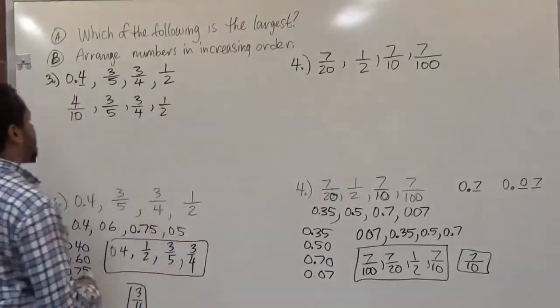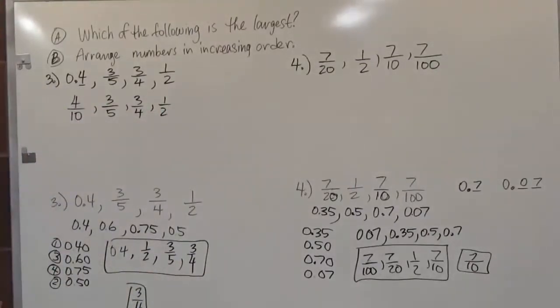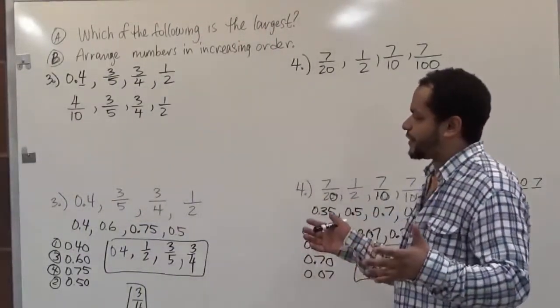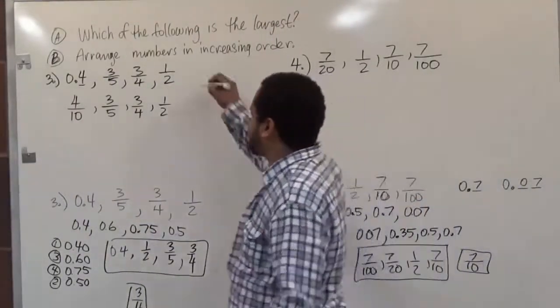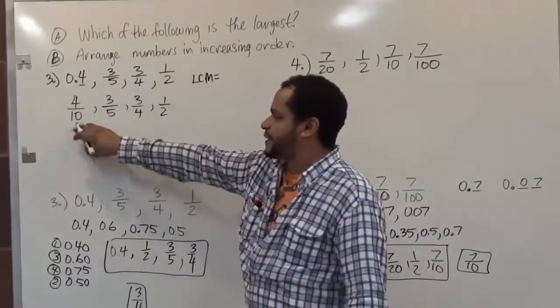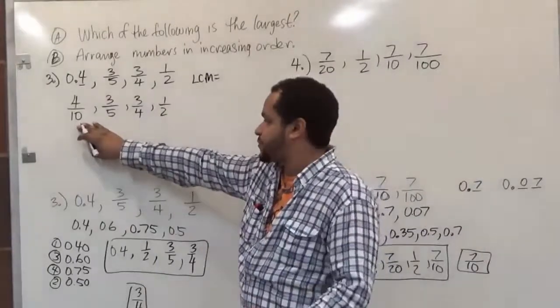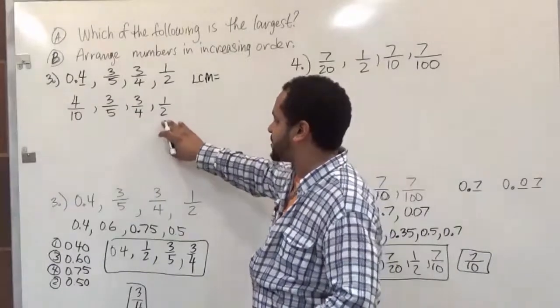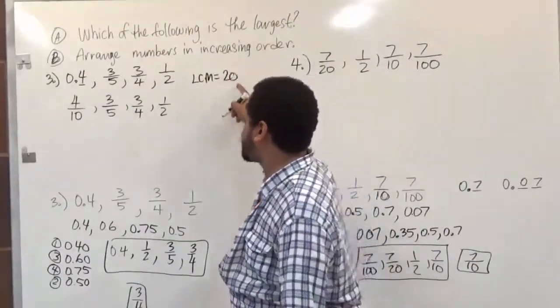And to see which one of these are bigger we want to make all the bottom numbers the same. Now if we're looking at 10, 5, 4 and 2 we know that these all have a common multiple, which we call the least common multiple, of 20. Because you can make 20 with 10, 2 times 10 gives us 20, 5 times 4 gives us 20, 4 times 5 gives us 20, and 2 times 10 gives us 20, so the least common multiple is 20.